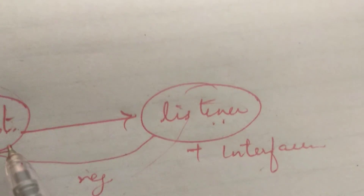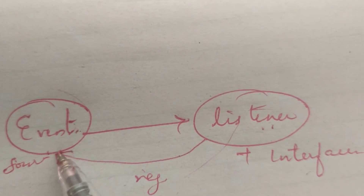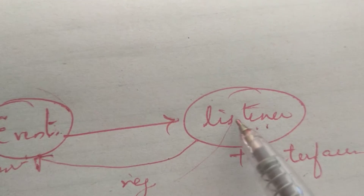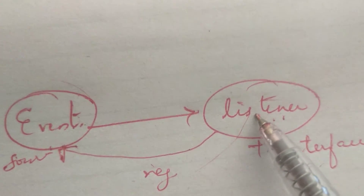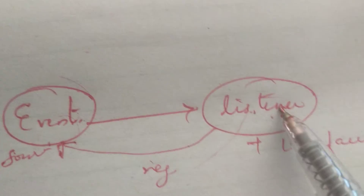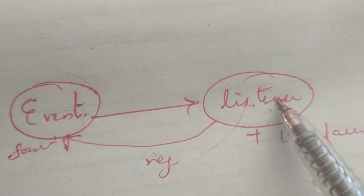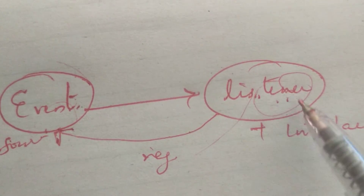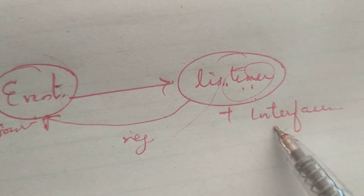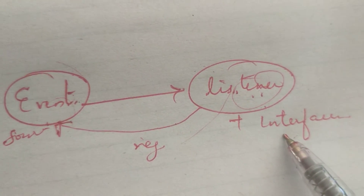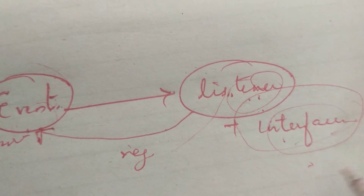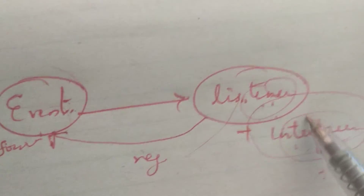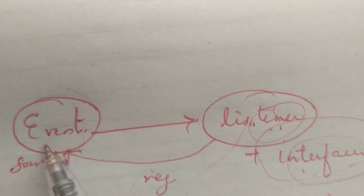Whenever an event is generated, a particular listener is activated. This event will be passed to the particular listener. That listener will execute, implement, or handle that particular event with the help of corresponding interfaces. This interface has some methods, and using these methods, the interfaces handle events.